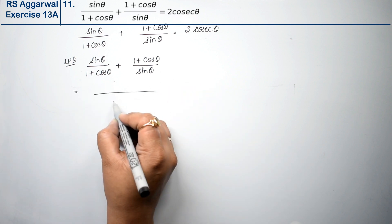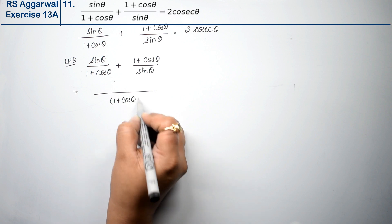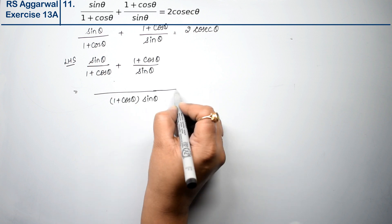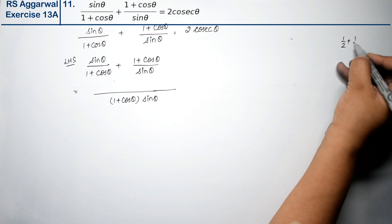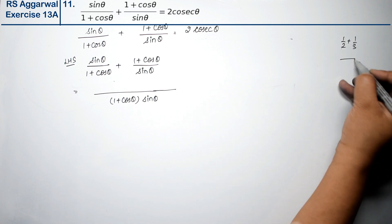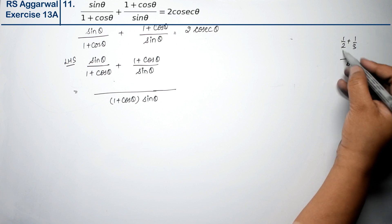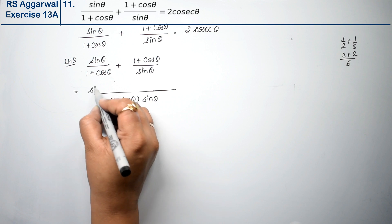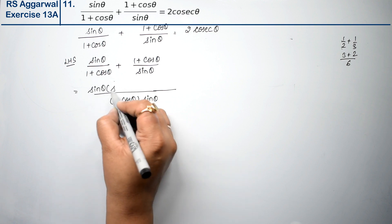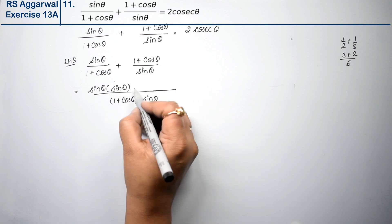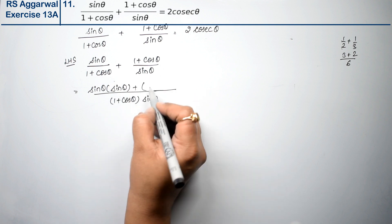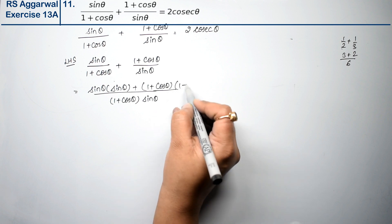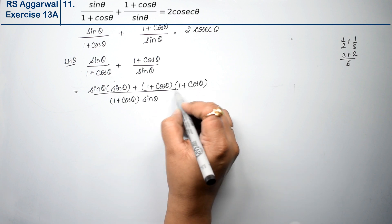We take the LCM, which is (1 plus cos theta) into sin theta. So we multiply: the first term gets multiplied by sin theta, giving sin squared theta, and the second term gets multiplied by (1 plus cos theta) into (1 plus cos theta), all upon the common denominator.